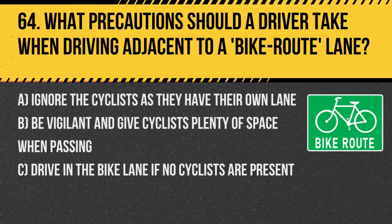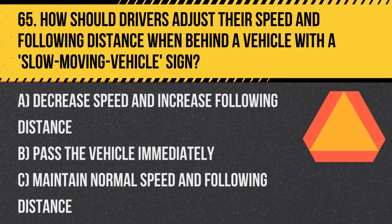Question 64: What precautions should a driver take when driving adjacent to a bike route lane? A. Ignore the cyclists as they have their own lane. B. Be vigilant and give cyclists plenty of space when passing. C. Drive in the bike lane if no cyclists are present. Answer: B. Be vigilant and give cyclists plenty of space when passing. Even with a dedicated bike lane, drivers should remain aware of cyclists' presence and movements.